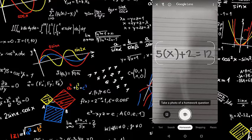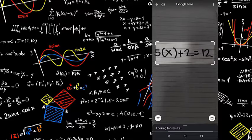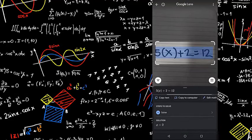Tap the shutter button. The app will now solve the problems. Tap 'steps to solve' - this is optional - to view the step-by-step procedure on how to solve the problems.